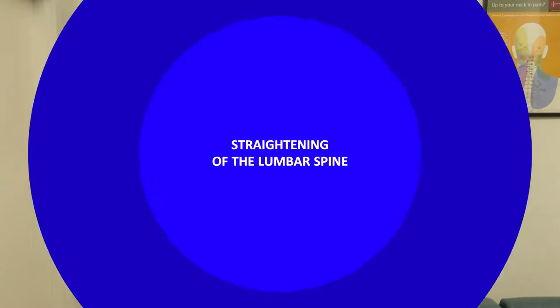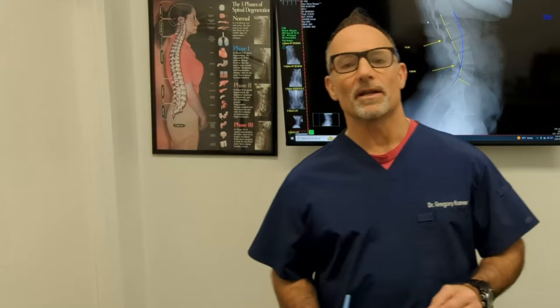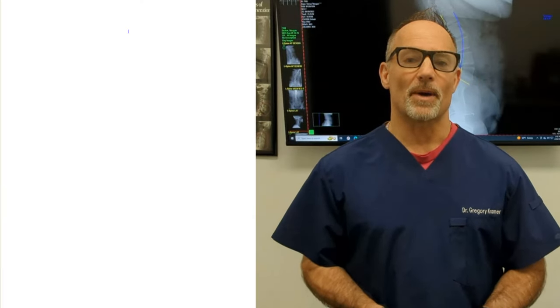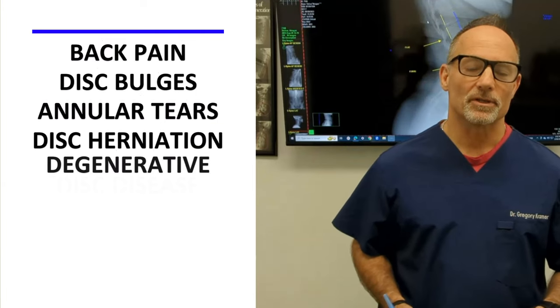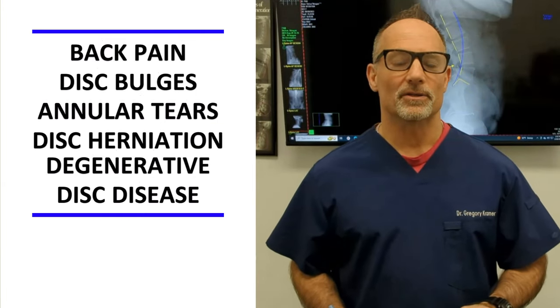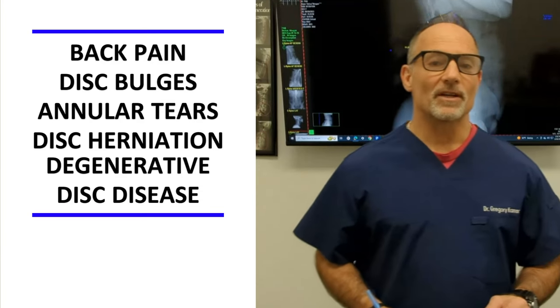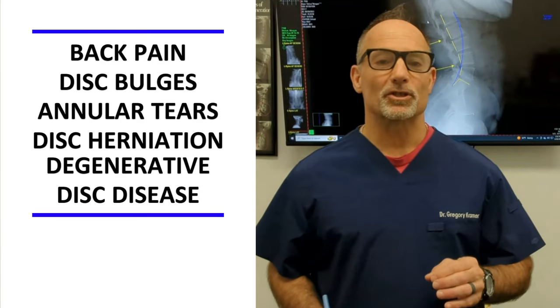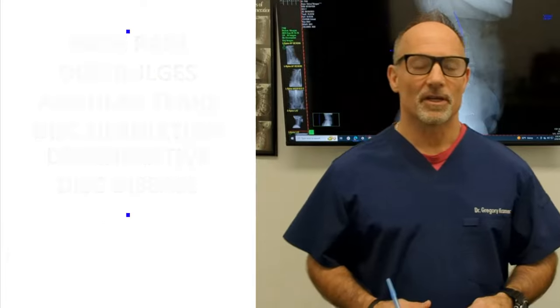How to fix a straightening of the lumbar spine or flat back syndrome. Did you know that straightening of the lumbar spine or flat back syndrome leads to chronic back pain, disc bulges, annular tears, sometimes disc herniation, and eventually premature aging of the joints or degenerative disc disease?